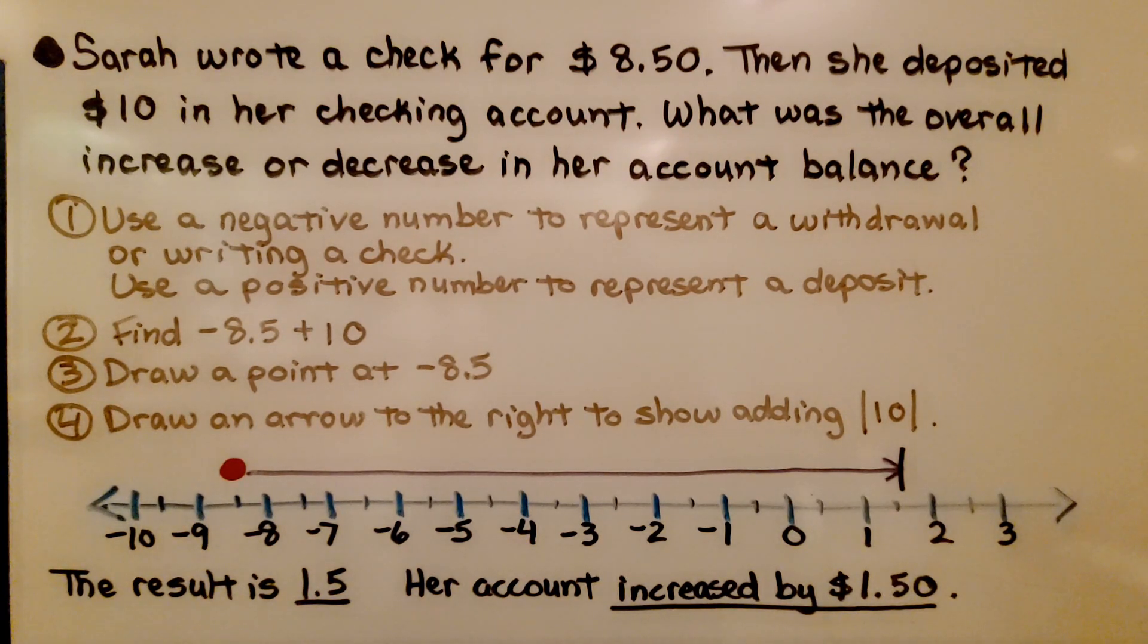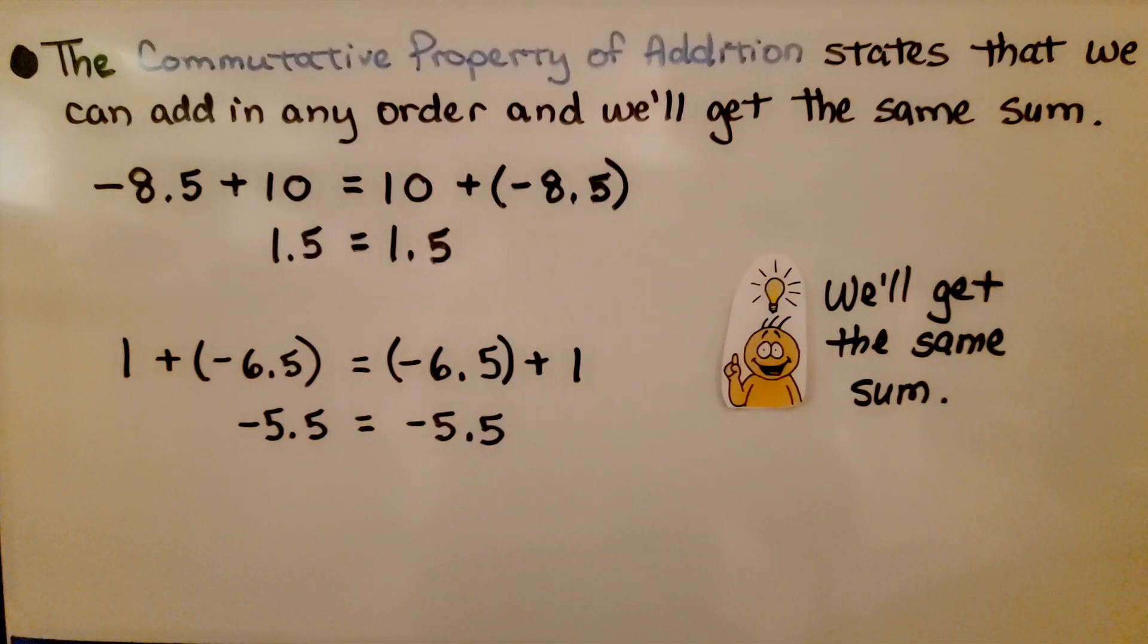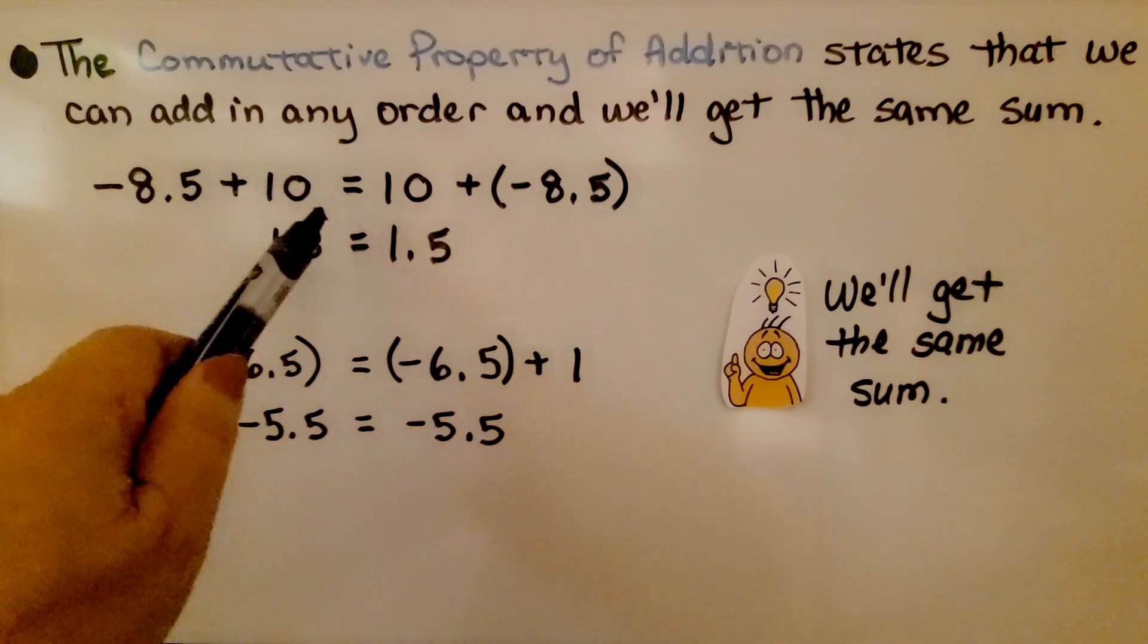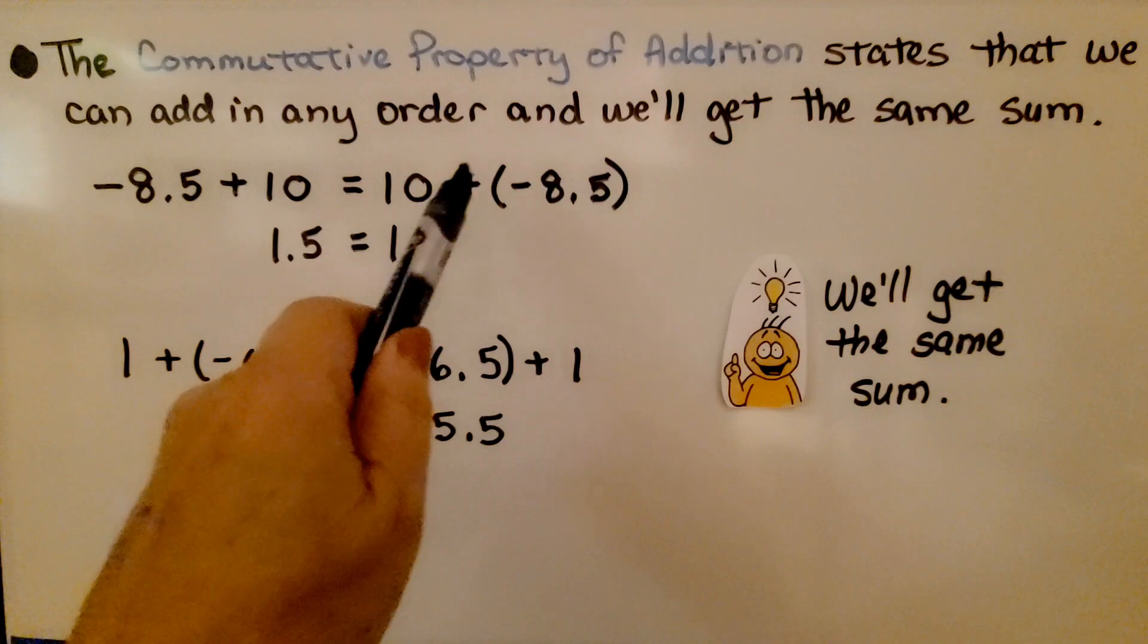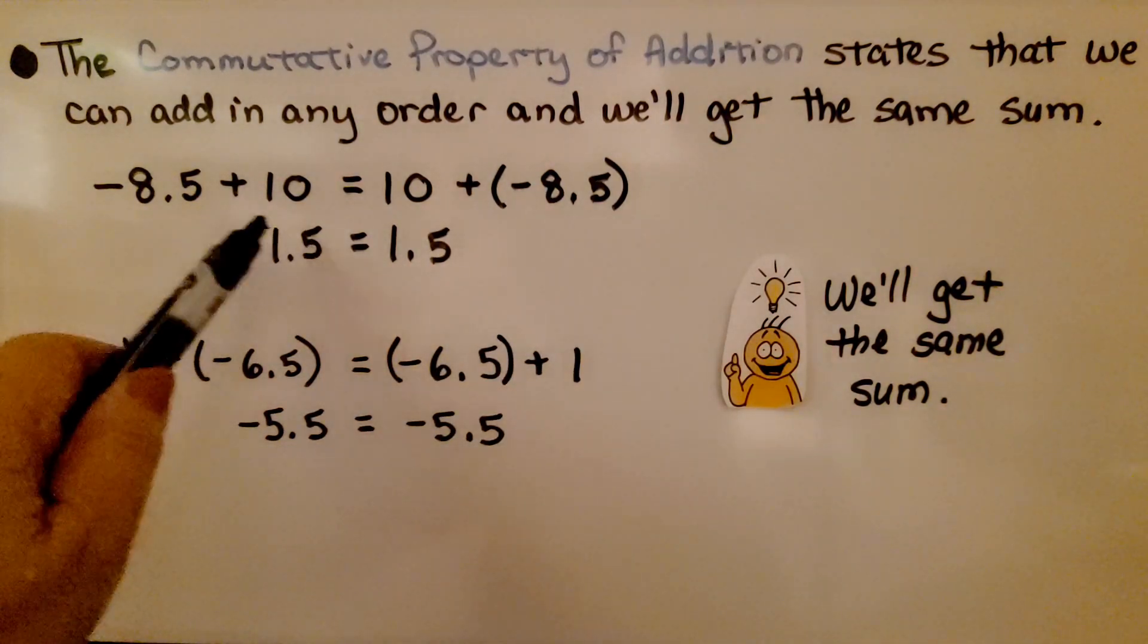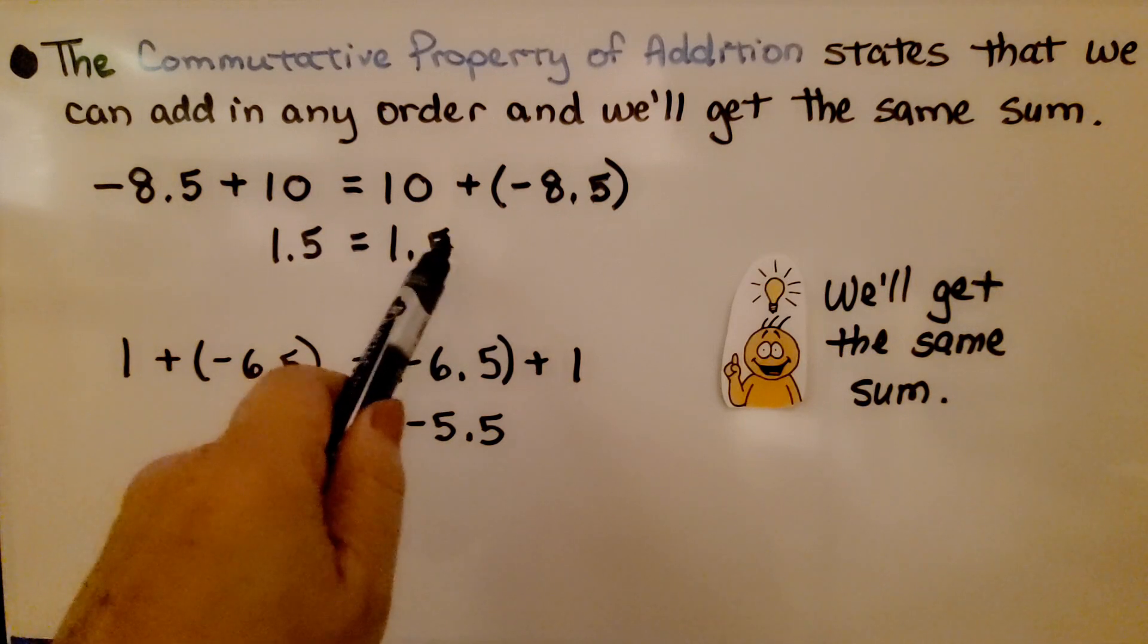Do you remember the commutative property of addition states that we can add in any order and we will get the same sum? If we have negative 8.5 plus positive 10, it's equal to adding positive 10 plus negative 8.5. This is 1.5, and this is 1.5.